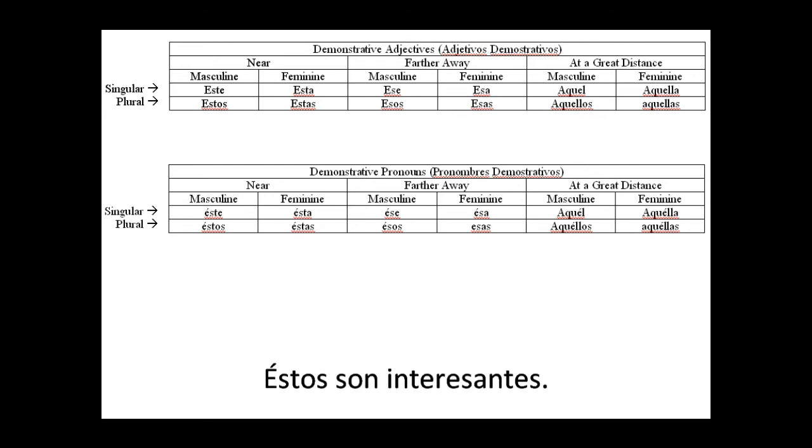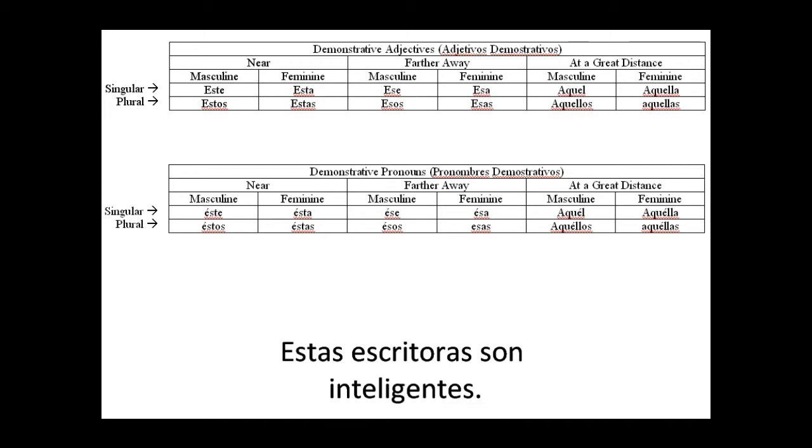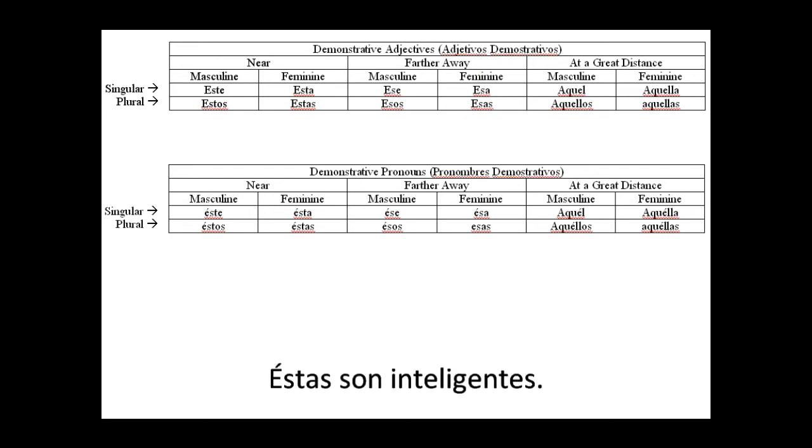If I want to say these writers are intelligent, I would say estas escritoras son inteligentes. Let's just say these ones are intelligent. I eliminate my noun, escritoras, and put an accent mark over the e, and have éstas son inteligentes.